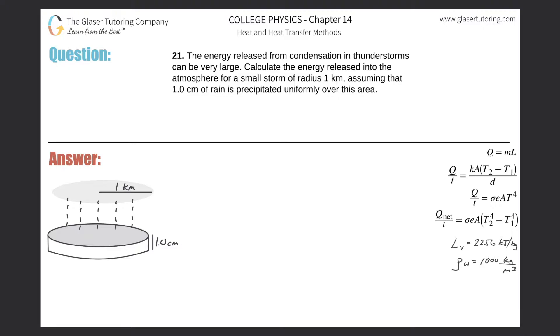Number 21. The energy released from condensation in thunderstorms can be very large. Calculate the energy released into the atmosphere for a small storm of radius one kilometer, assuming that one centimeter of rain is precipitated uniformly over this area.